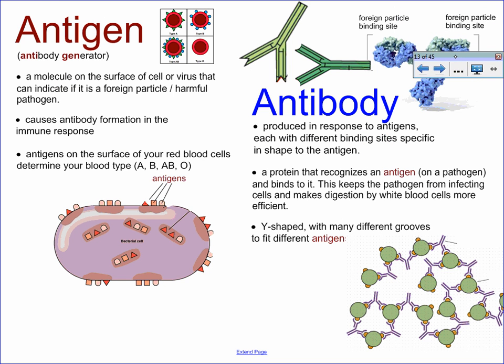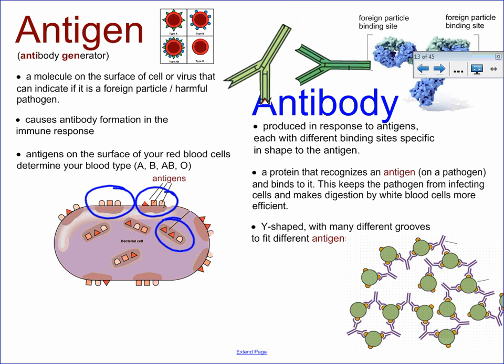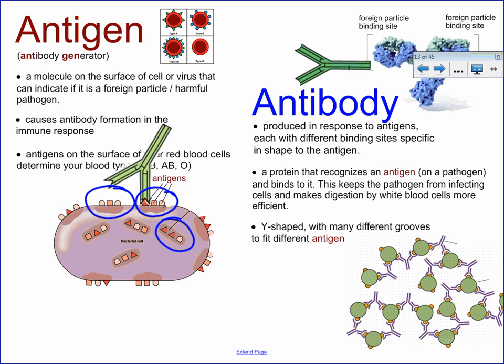Before we can talk about the immune response, you should remember that antigens are cellular surface molecules that help you identify if something is a foreign object or not. There are also objects called antibodies that are produced in response and will bind to a specific antigen. This marks pathogens for destruction and also prevents them from entering any other cell in the body.